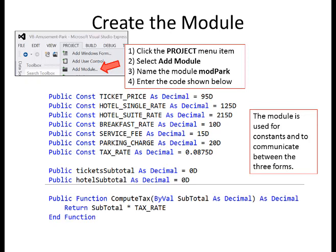Now I need to create the module. Select the Project menu item, select Add Module, and name the module ModPark. Enter the code shown: constants for ticket price, hotel single rate, hotel suite rate, breakfast rate, service fee, parking charge, and tax rate — all declared as public so they can be accessed by all the forms. I also have two variables: ticket subtotal and hotel subtotal. These are the locations where the other forms will store results so they can be read by the main form.